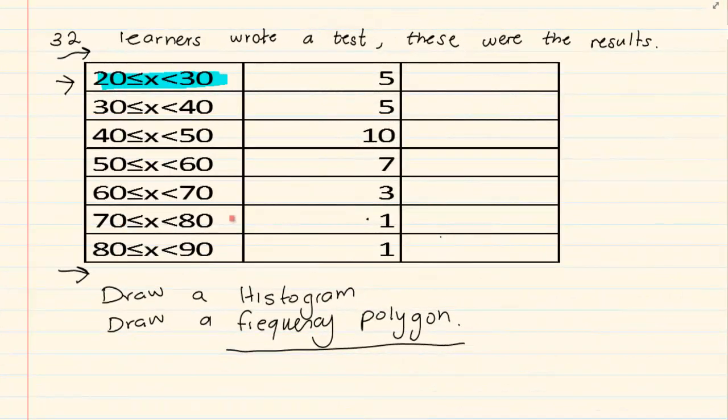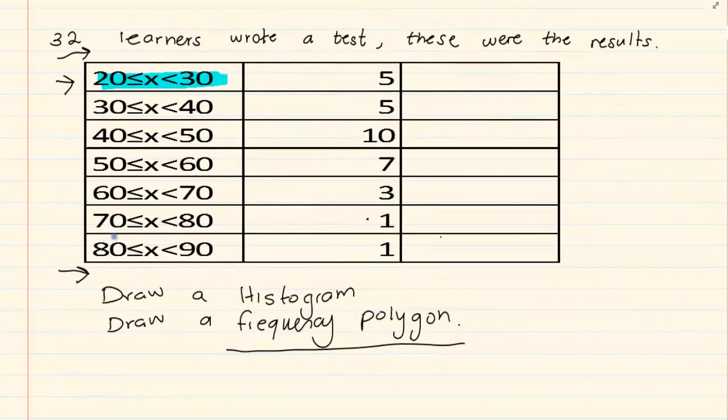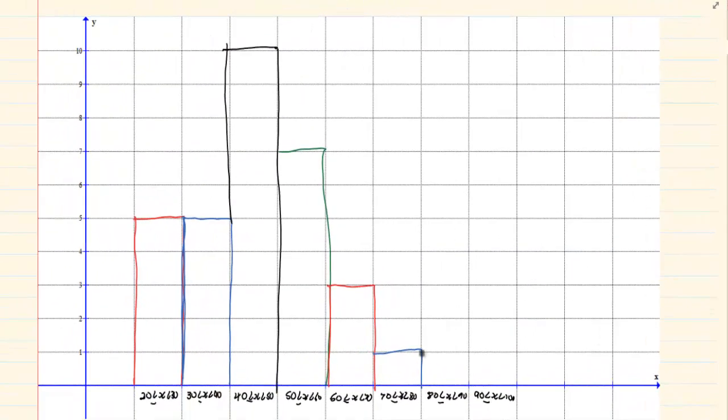70 to 80 is 1, and then 80 to 90 is 1 again. So when you look you have a histogram. Can you see? The histogram is basically bars that are right next to each other. Now let's go to the next one.